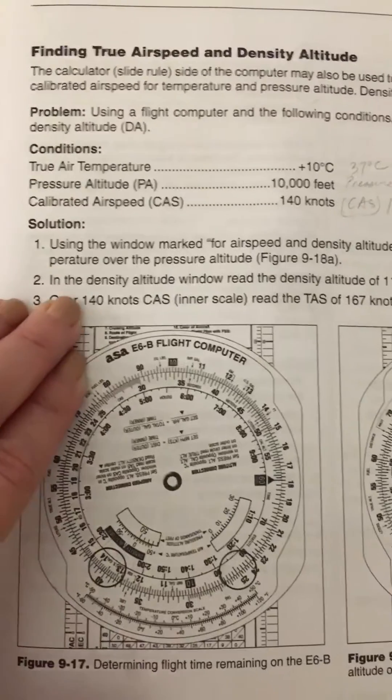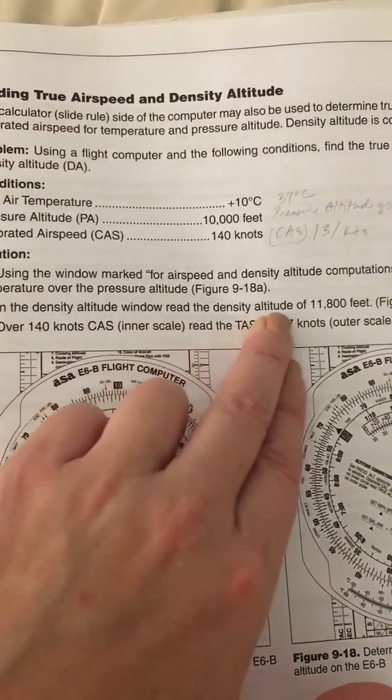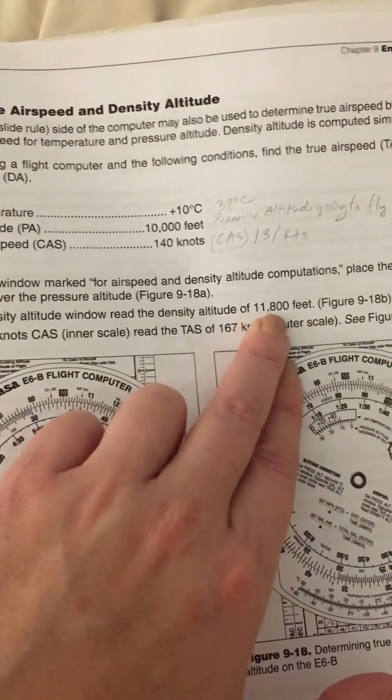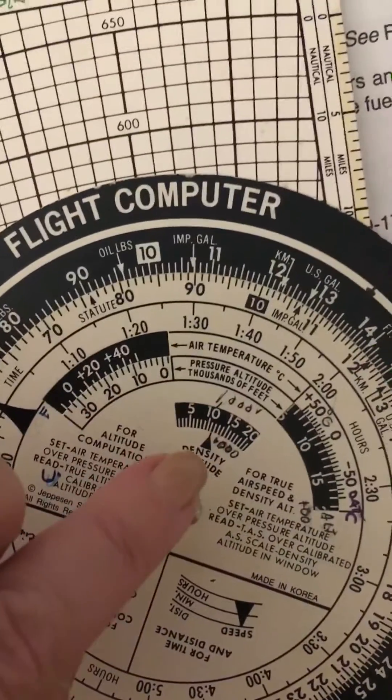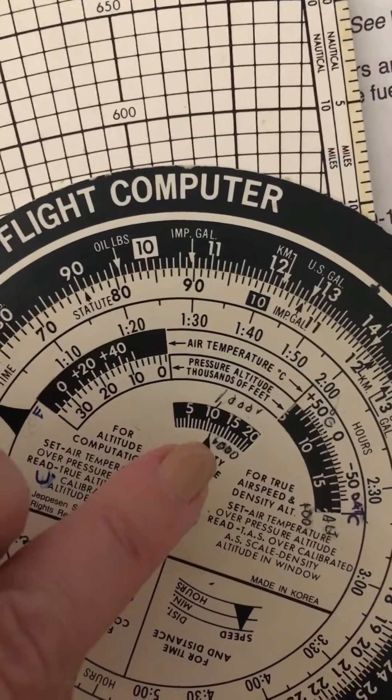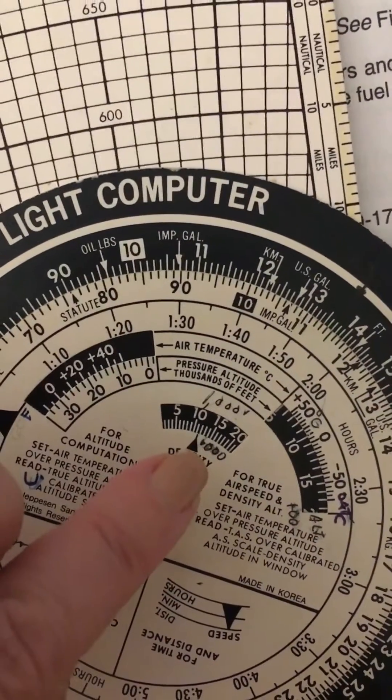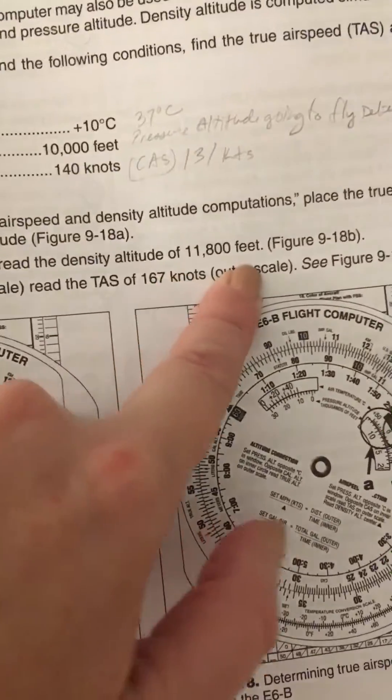Now in the density altitude window, we're going to read the density altitude of 11,800 feet. We go right here to this little window and we're reading, it's almost 12,000 feet, so 11,800 feet.